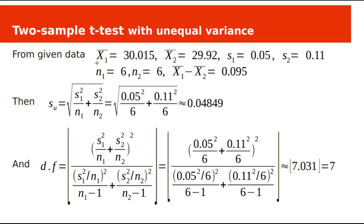From sample A1, the sample mean X1-bar is 30.015 and the standard deviation S1 is 0.05. For sample A2, the sample mean X2-bar is 29.92 and the standard deviation S2 is 0.11. Both samples are of size 6. The difference between sample means X1-bar minus X2-bar is 0.095.